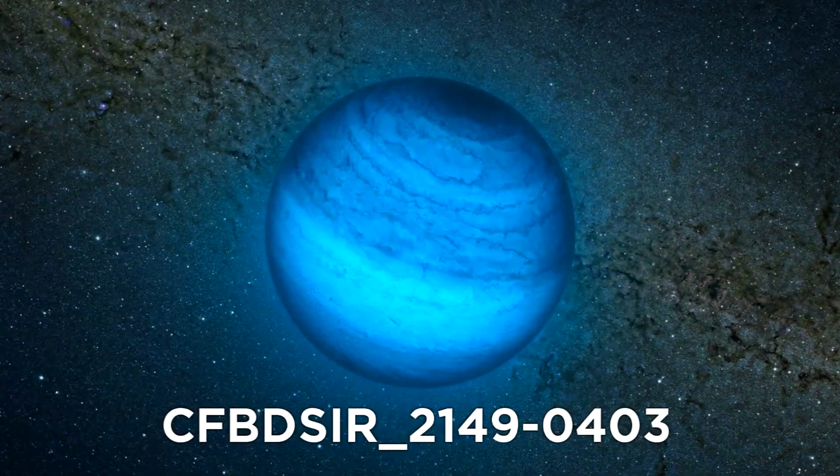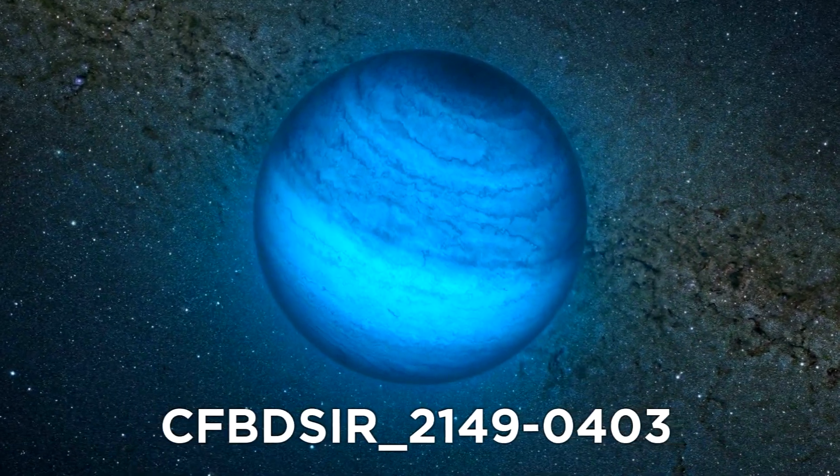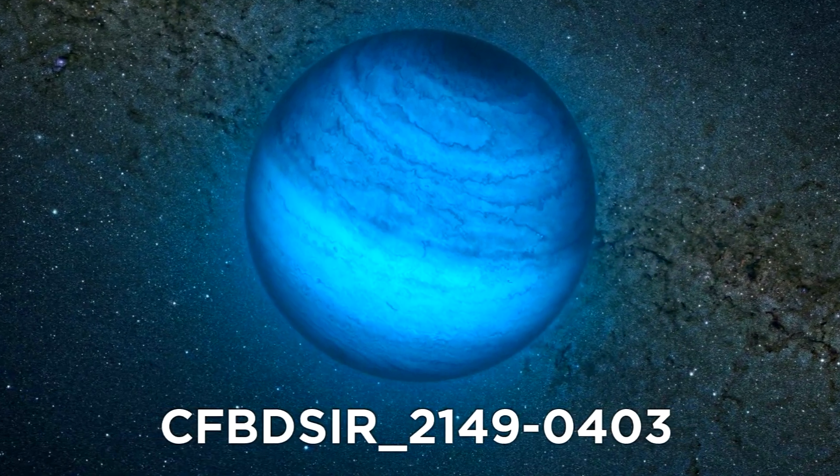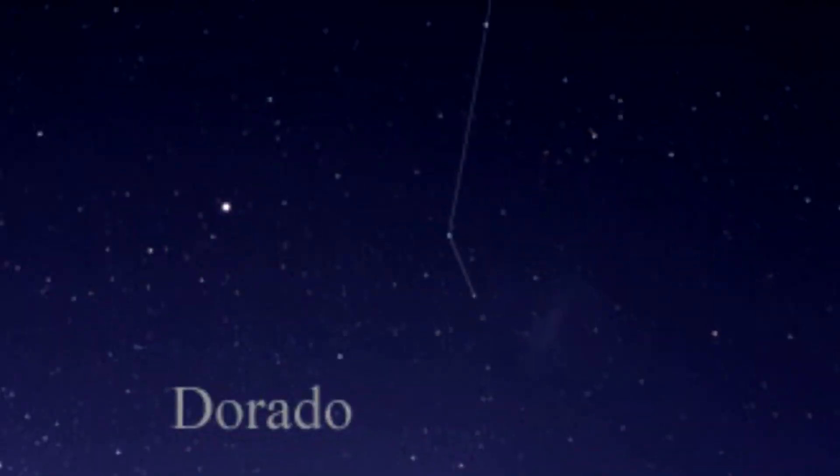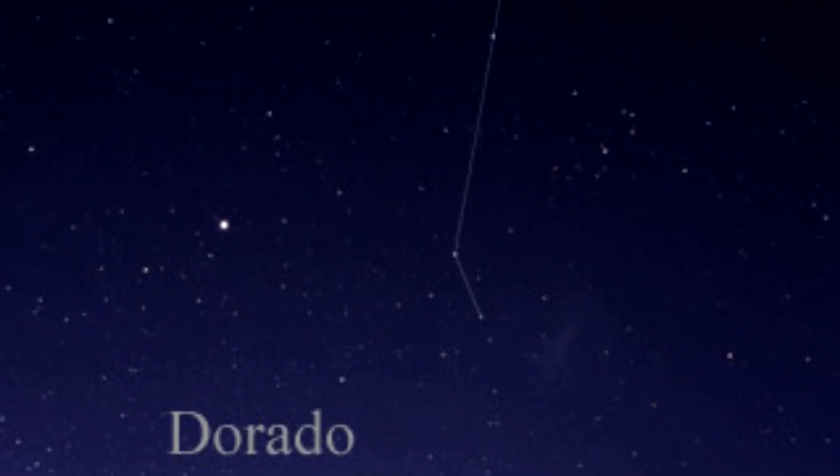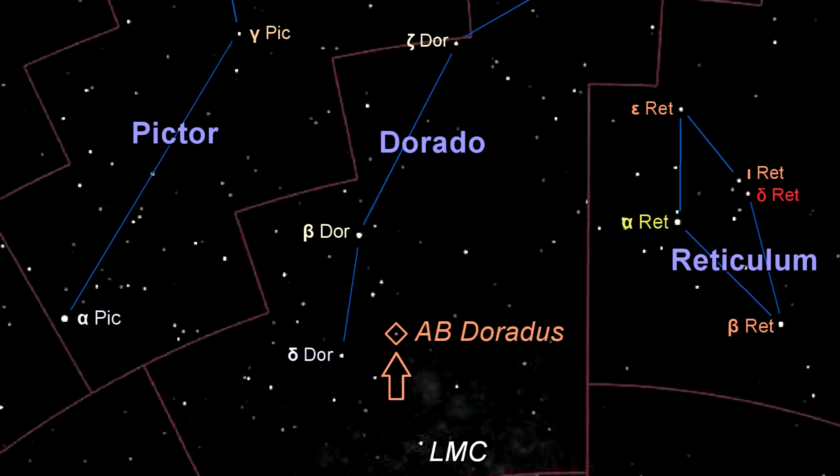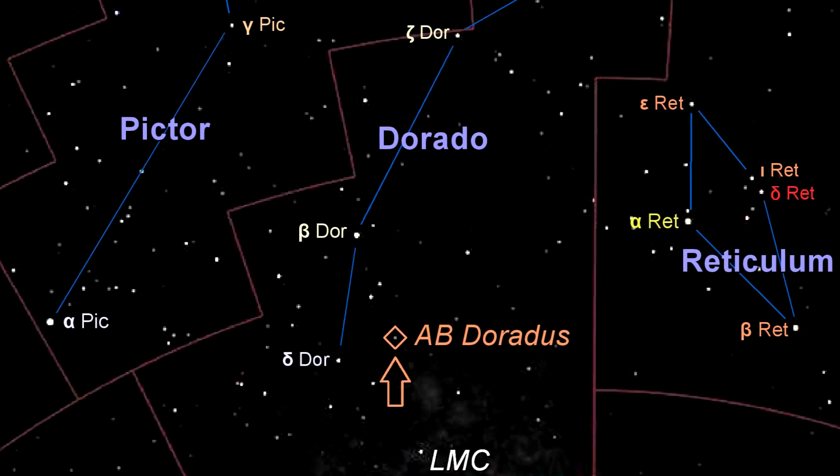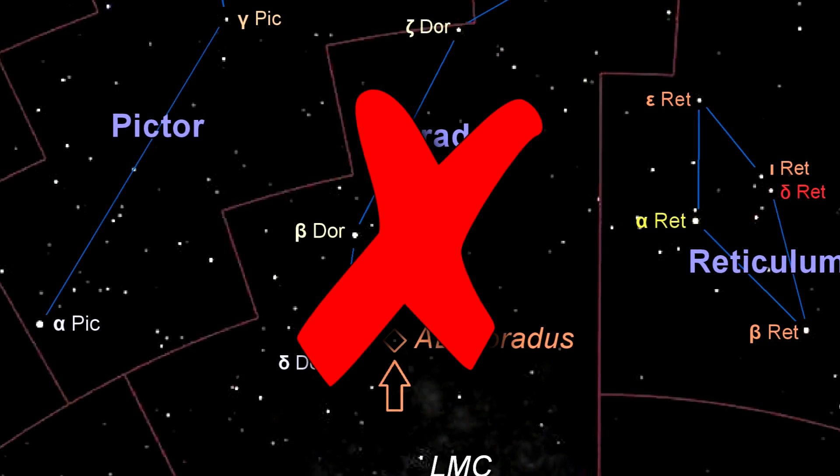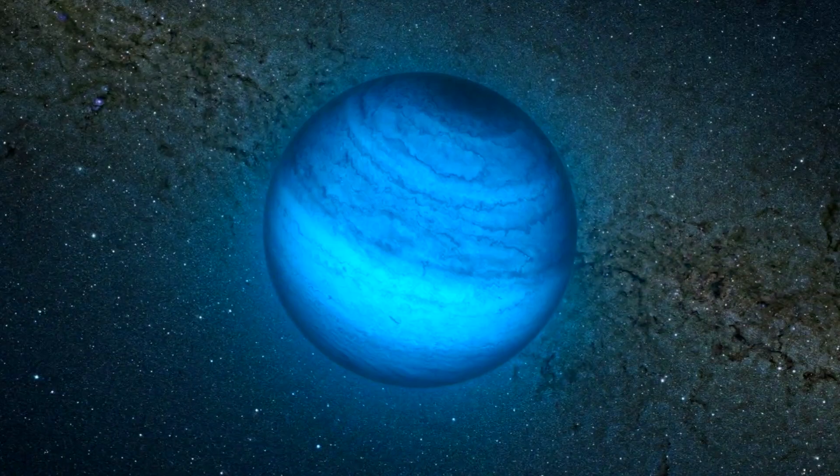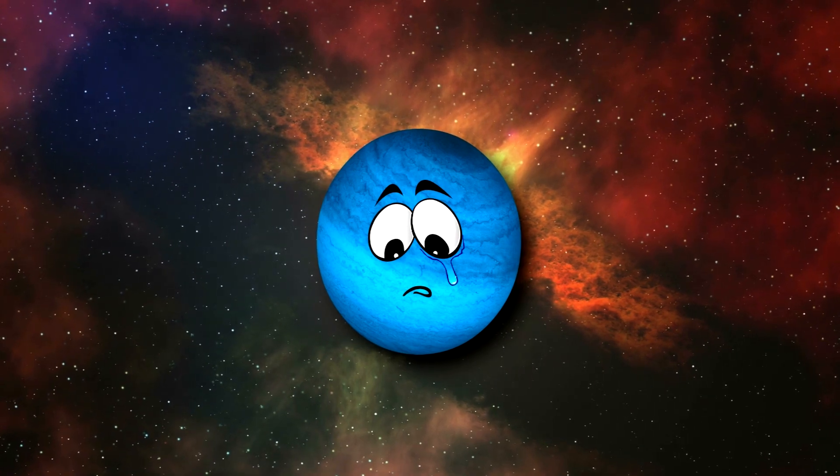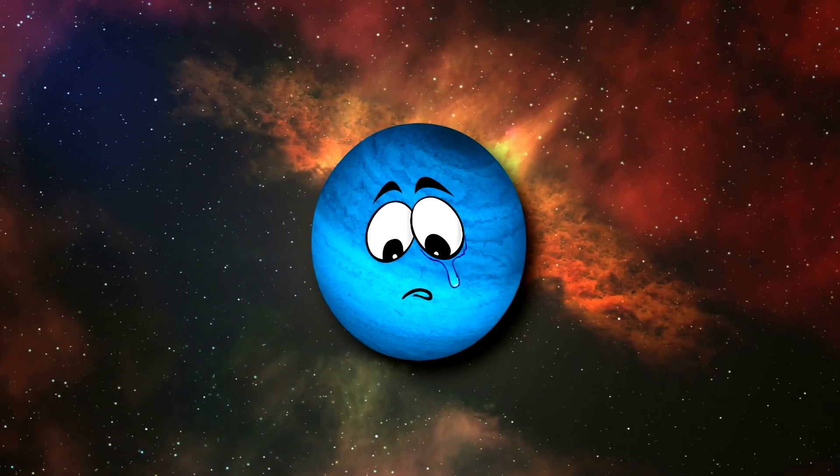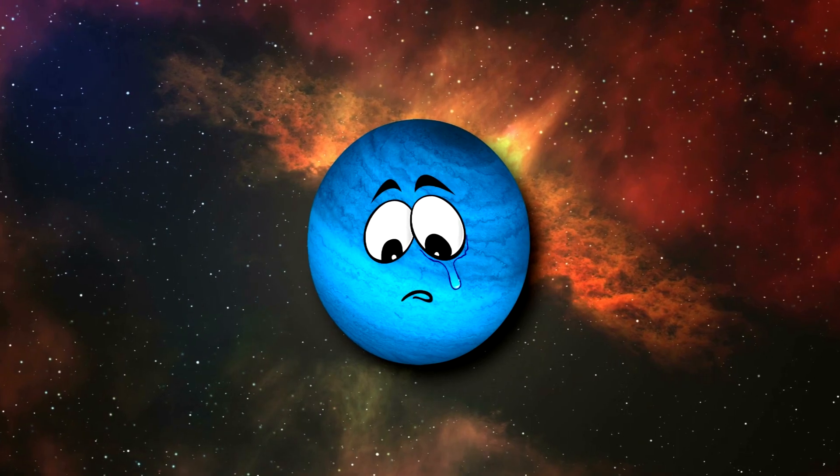The not very catchily named CFBDSIR-2149-0403 is a free floating planetary mass located near the constellation of Dorado. The team that discovered it initially believed it to be a part of the AB Dorados moving group, but this was then proved to be false, which means that this mass is not able to be classified as a planet. I can't help but feel bad for it to be honest. Floating around space, not quite a planet, not quite a rock. Doomed to a life of absolute solitude.